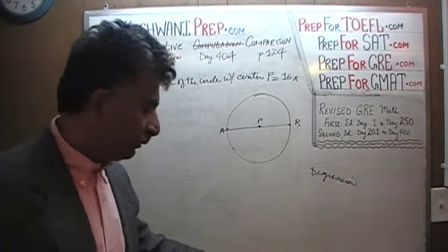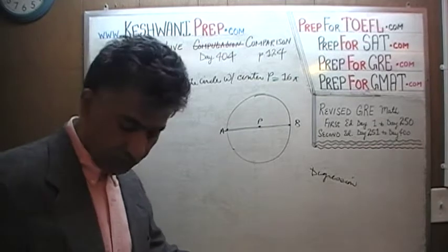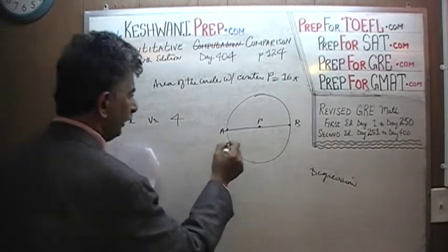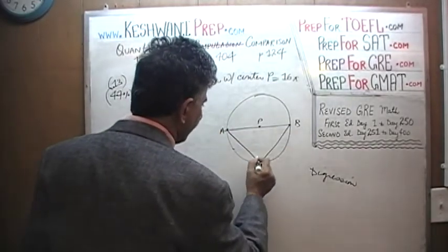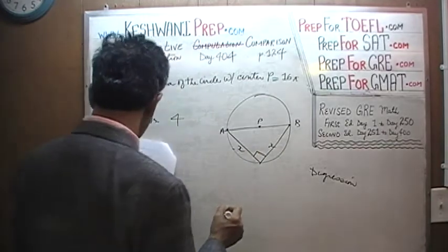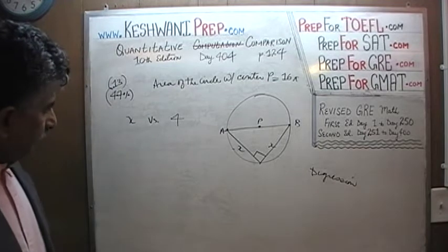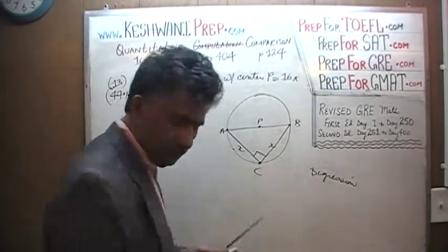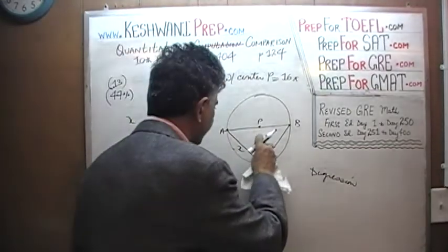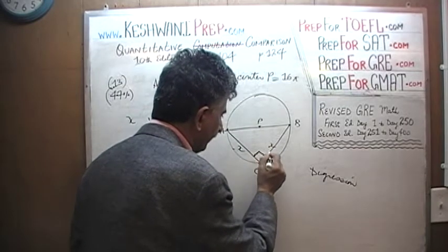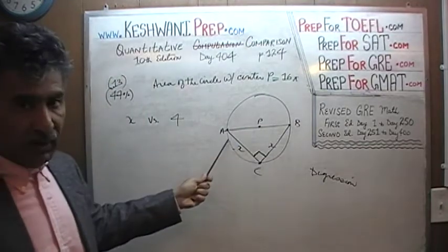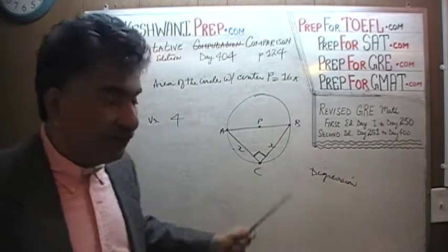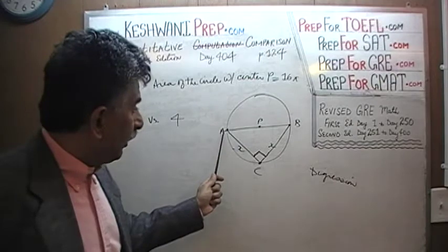We have to know this terminology for the exam — otherwise if you see the word 'chord' you might get confused. They are asking us to compare X versus 4. We are given a triangle where one angle is a right angle, and two sides are both labeled X. Triangle ABC is a right angle triangle — the right angle is 90 degrees. The side facing the right angle is the hypotenuse, so A to B is the hypotenuse. But A to B we also know is the diameter. If we can figure out the length of the diameter, we can figure out X by using the Pythagorean theorem.